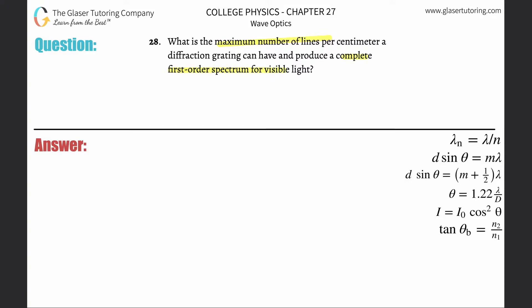We have to produce a complete first order spectrum. So we're going to use our constructive interference formula where the distance between the slits, or between the number of lines, times sine of theta equals the order multiplied by the wavelength.